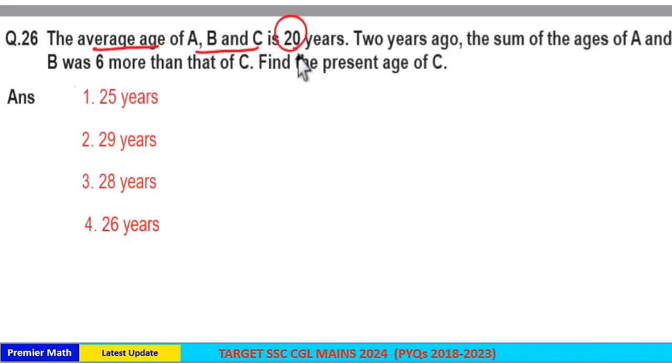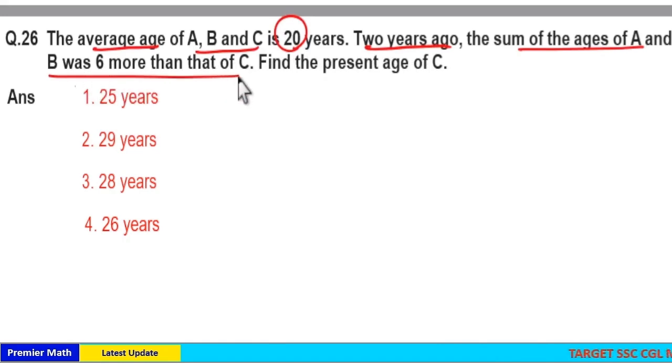Average age of A, B and C is 20 years. 2 years ago, sum of ages of A and B was 6 more than that of C. Find the present age of C.